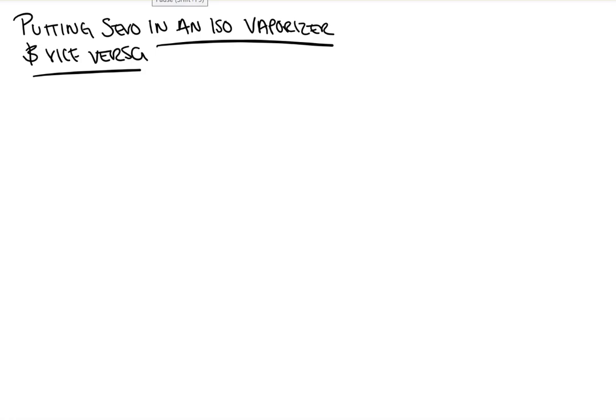Hi everyone. In this video from Count Backwards from 10, we're going to take a look at what would happen if you put the wrong volatile anesthetic into the wrong container — putting sevo into an iso vaporizer, or iso into a sevo vaporizer. We're going to look at this because it's important to understand the concept of why it happens, and it is going to come up on your board exams. So let's get started.